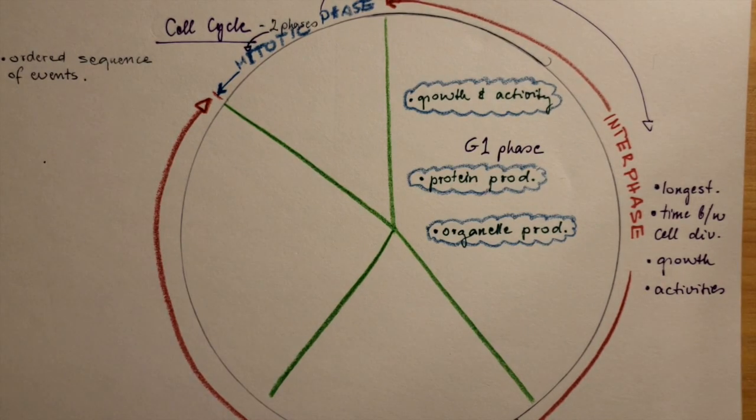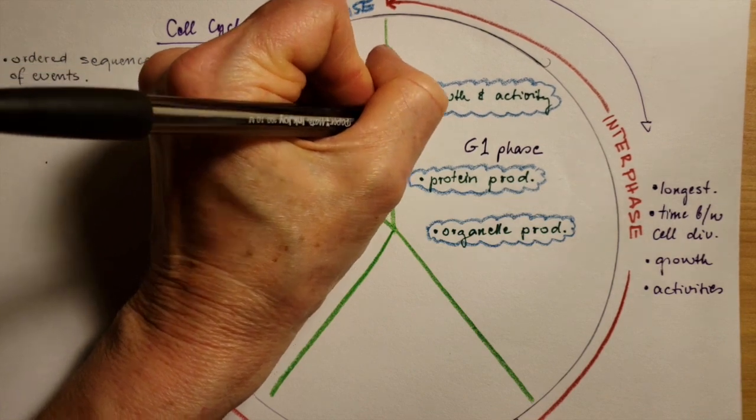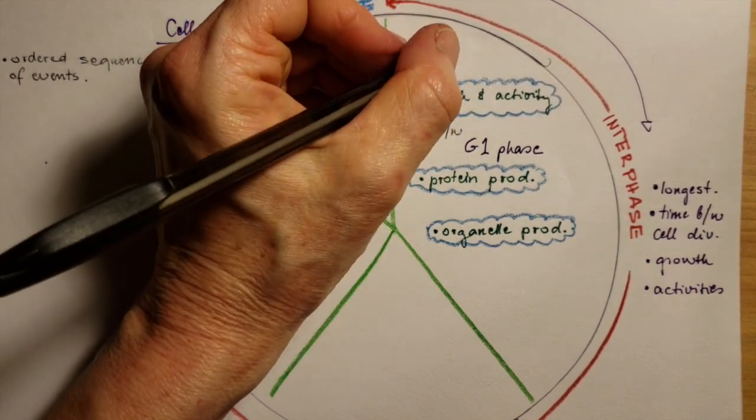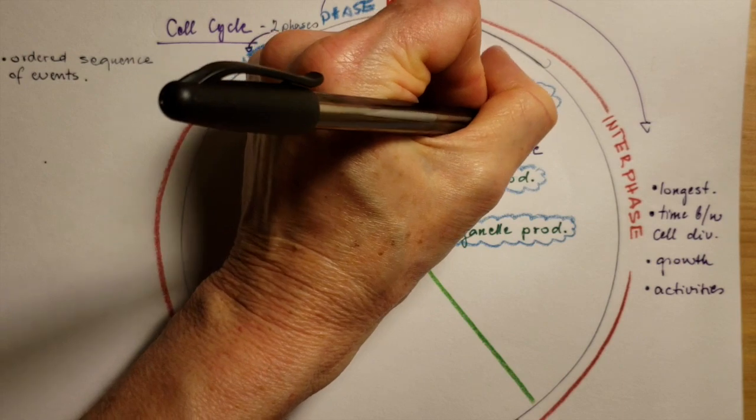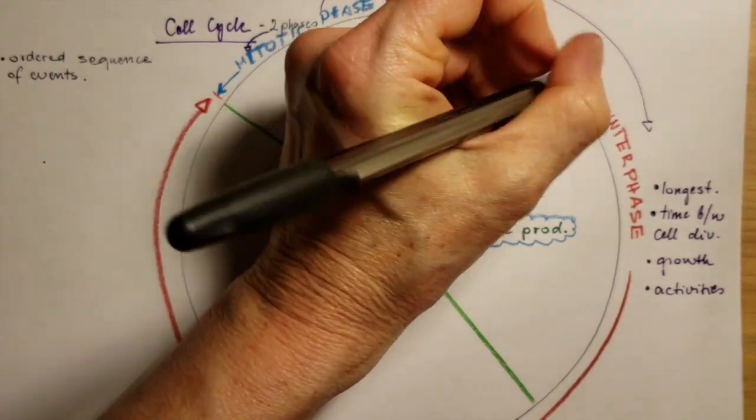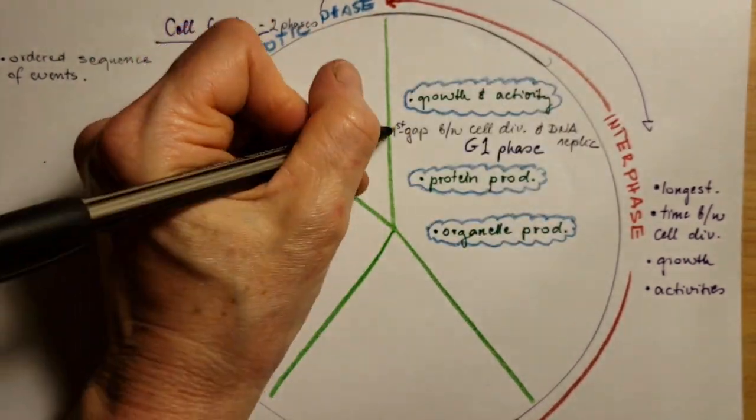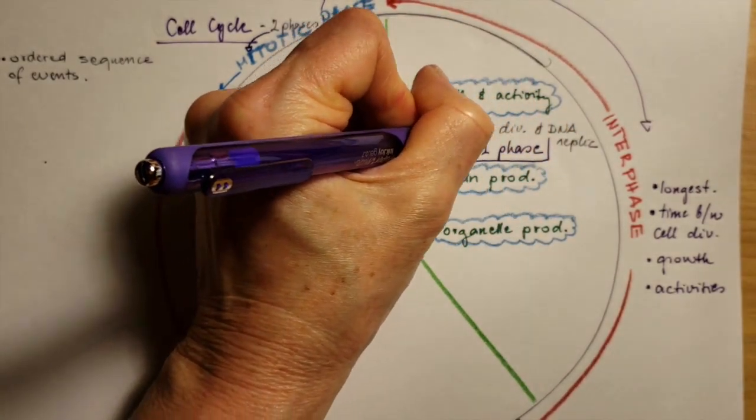Organelle production like making more mitochondria or endoplasmic reticulum. So the G1 phase is the first gap between cell division and DNA replication.